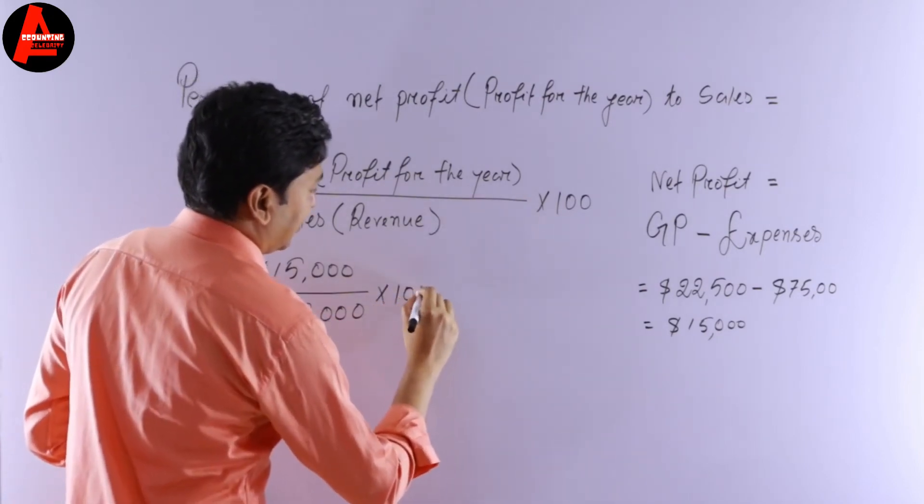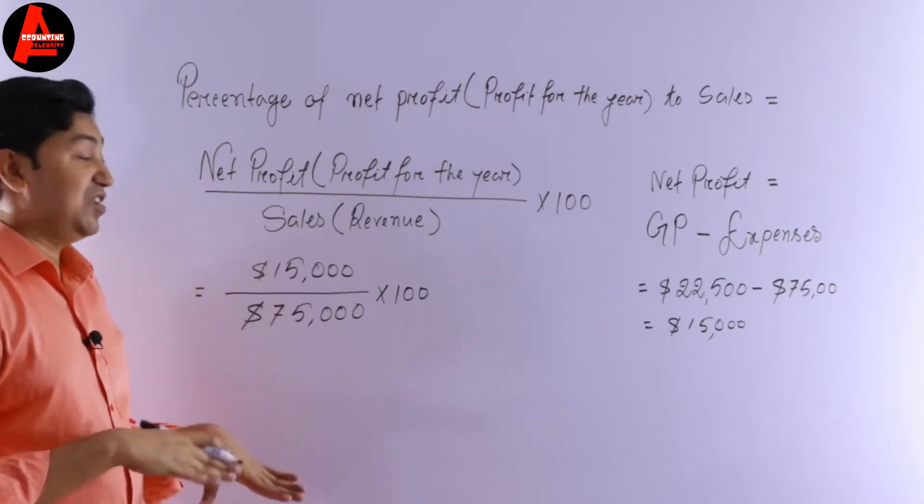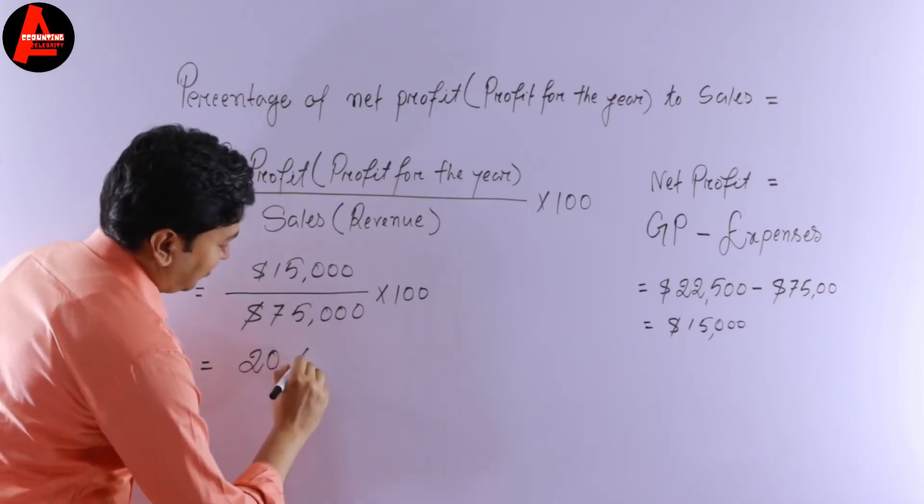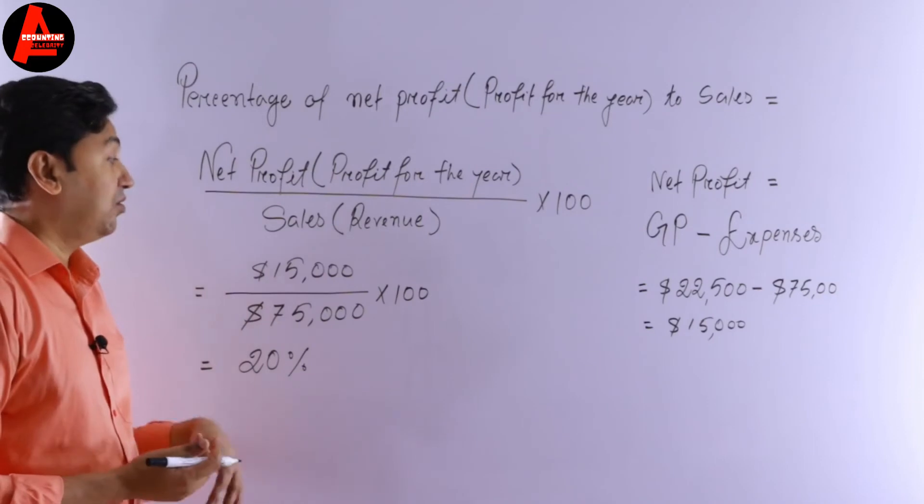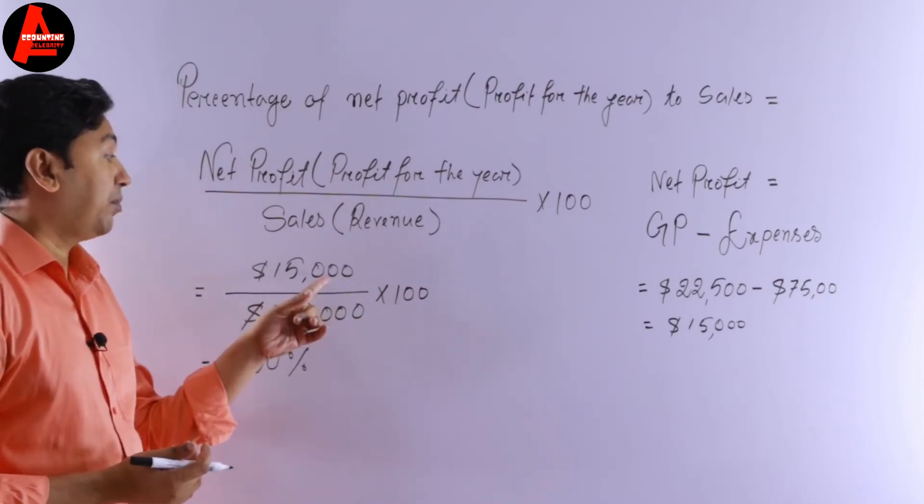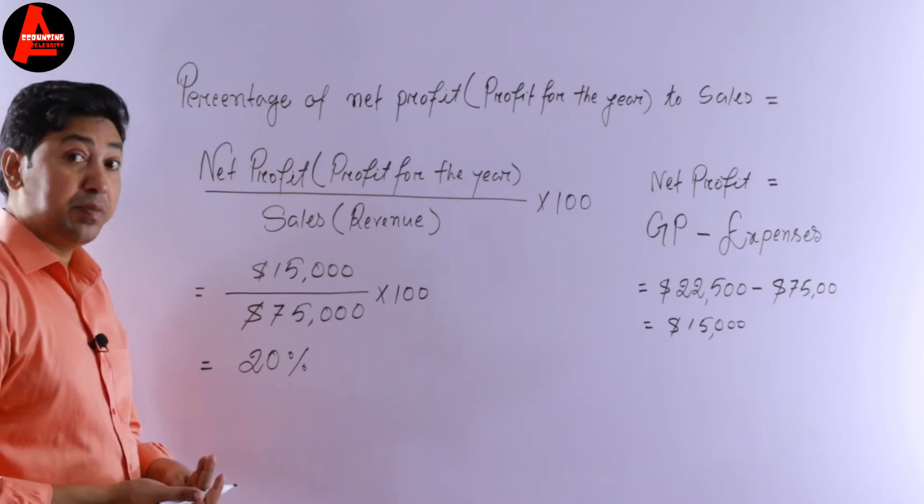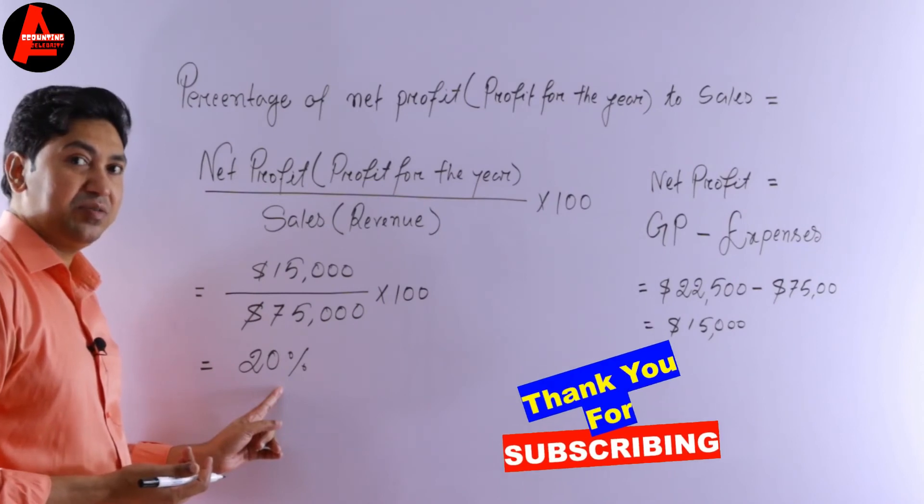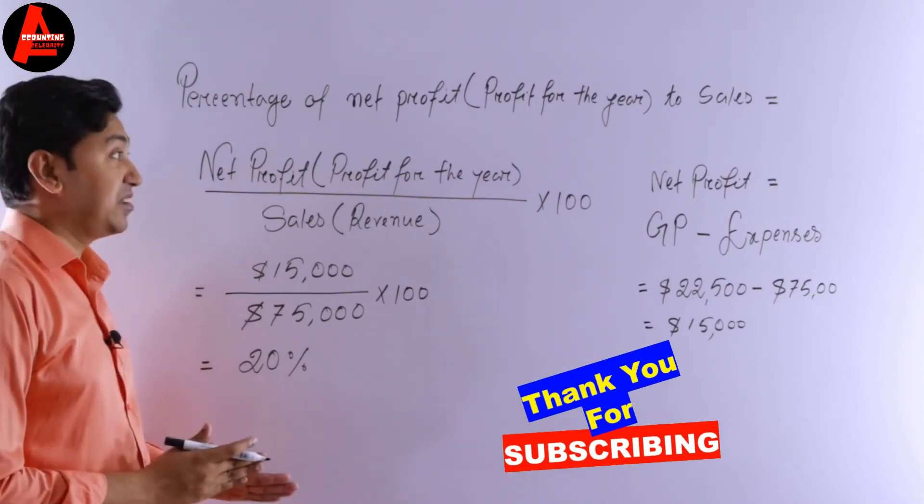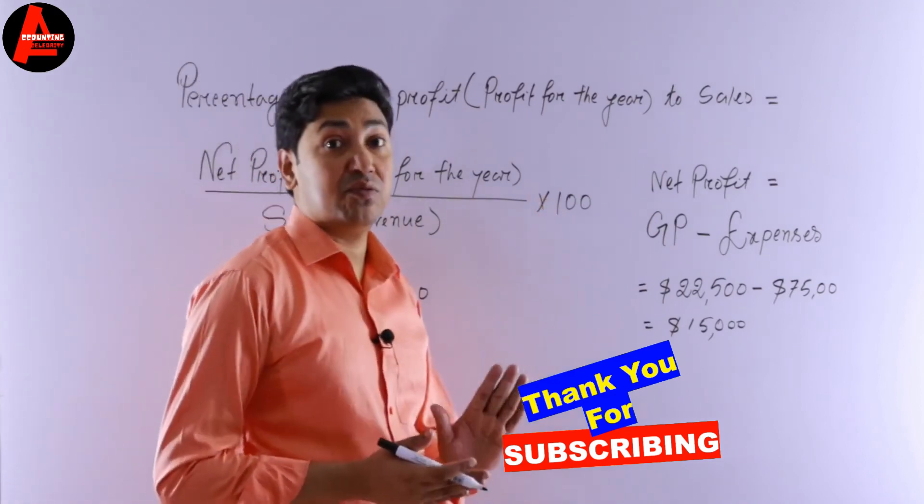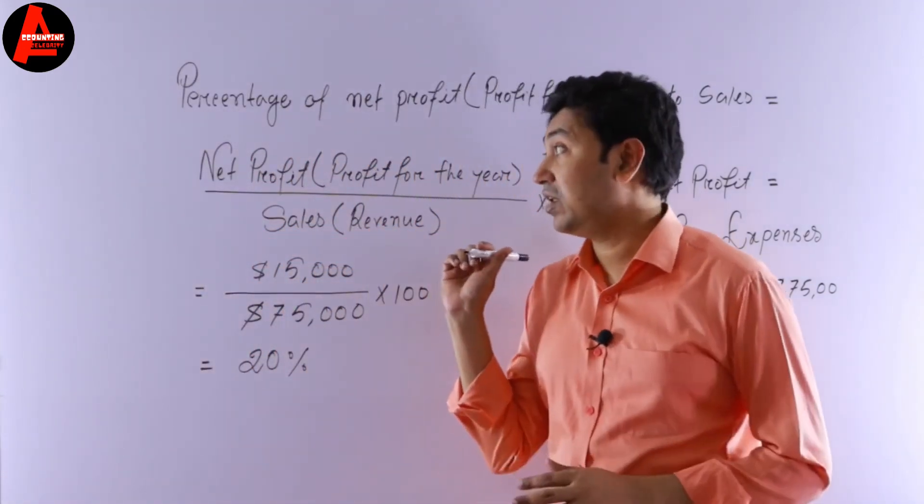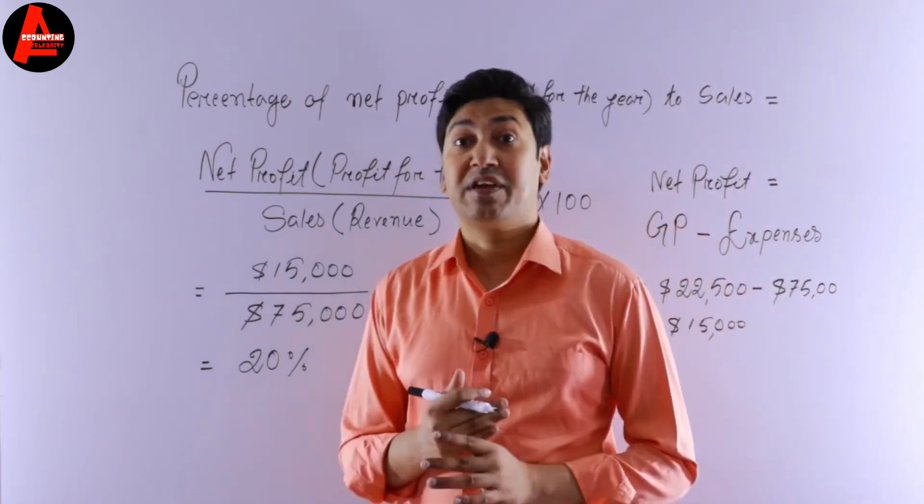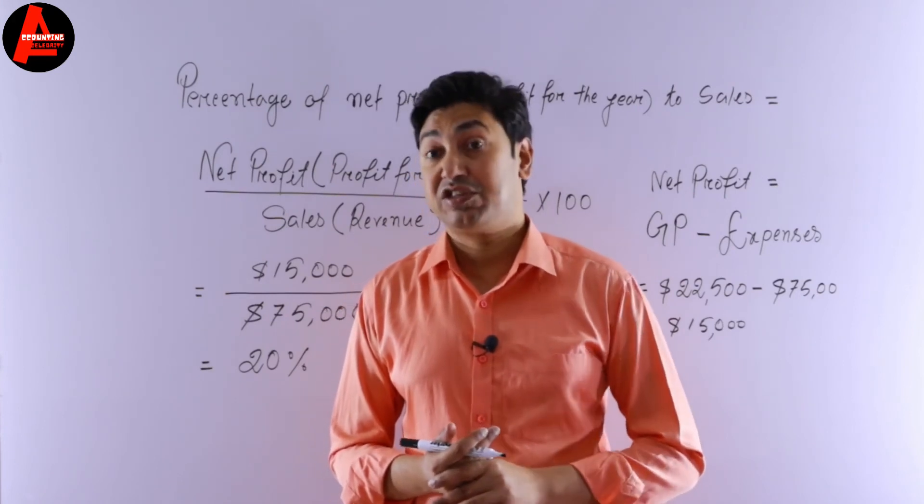Now if we calculate all this, what we get is 20%. How? Multiply 100 by 15,000, get the answer, divide it by 75,000. We will get 20%. So very simple calculation if you know these formulas - how to calculate your gross profit first, then percentage of net profit to sales. This is a very important topic, very common in the analysis and interpretation chapter.